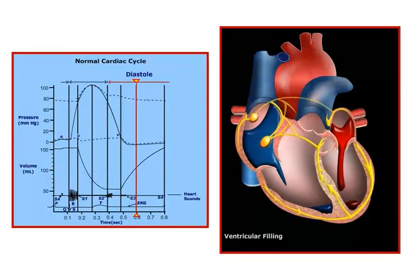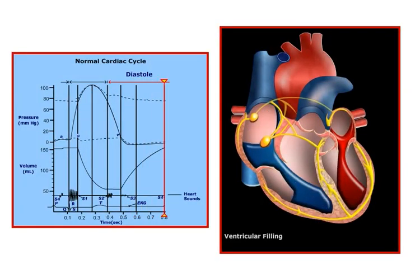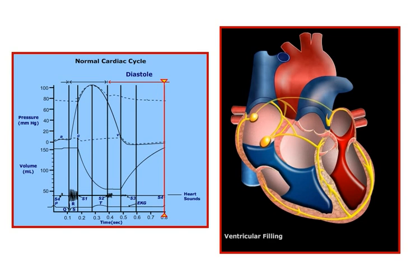Now, as the ventricles continue to fill with blood and expand, they become less compliant and the ventricular pressures begin to rise. This reduces the pressure gradient across the AV valves so that the filling of the ventricles slows down. This last phase of the cardiac cycle ends with the appearance of the next P wave, which begins a new cycle.